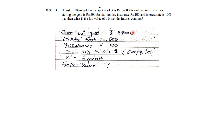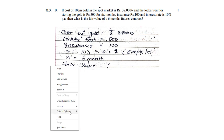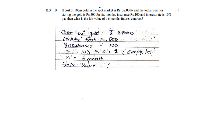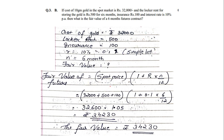Under the data: cost of gold is 32,000, locker rent is 500, insurance is 100, and the rate is 10% which is 0.1. They didn't mention compound interest so we assume simple interest. The number of months is 6. Now remember the fair value formula is: Spot Price × (1 + R × N/12), using the simple interest formula.